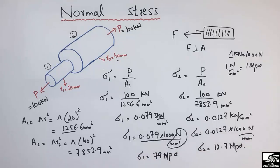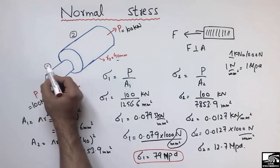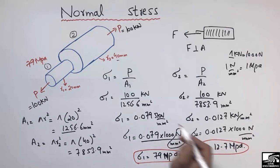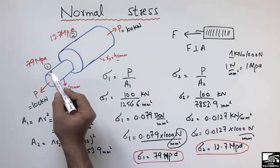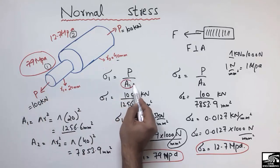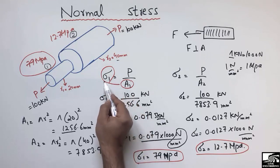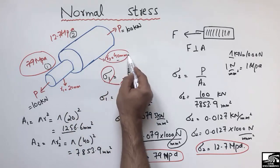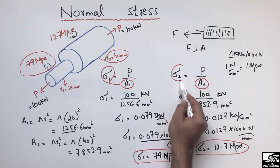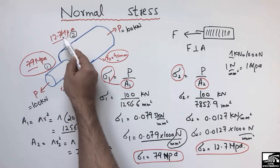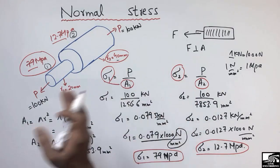There is a big difference between the stresses in these two cross-sections of the same object. σ1 = 79 MPa while σ2 = 12.7 MPa. More stress is created in the smaller cross-section because stress is inversely proportional to area. If the area is small, more stress is created; if the area is large — as in the second cross-section with the larger radius — the stresses are smaller.